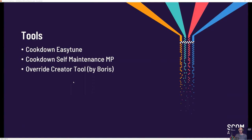Other tools that are very useful: also from Cookdown, but originally from Tao Yang — the Self-Maintenance Management Pack, which is also very useful for handling false alerts. One quite useful thing we have used in it is the managing of rules, where you can set up the self-maintenance pack to close rules after a certain time — because rules don't self-close. And you also have the Override Creator tool by Boris, which is the prequel to Cookdown EZtune. Kevin Holman has a link to that on his page.